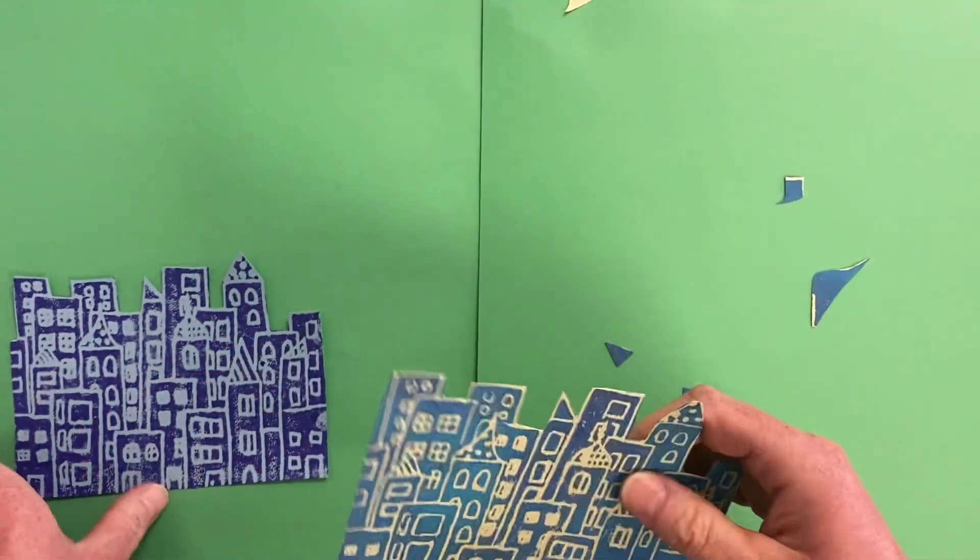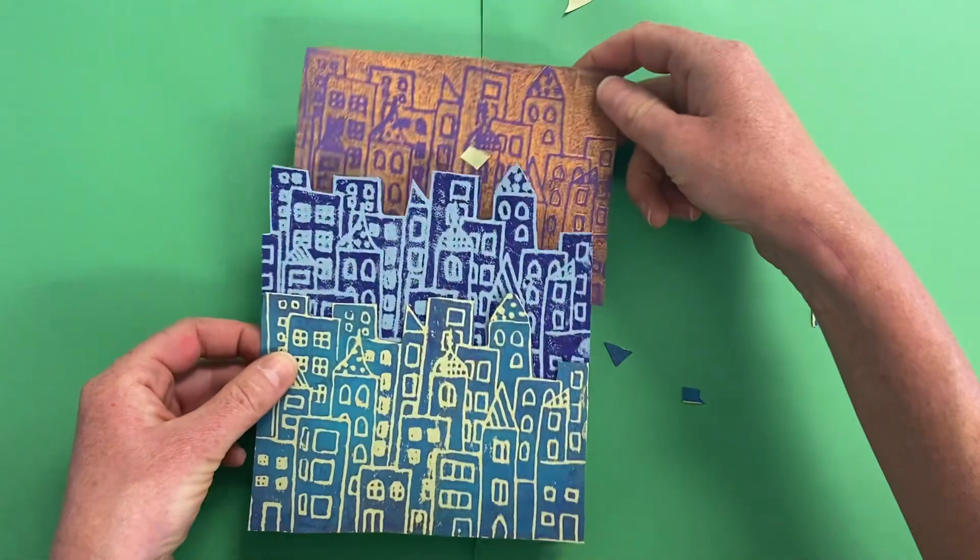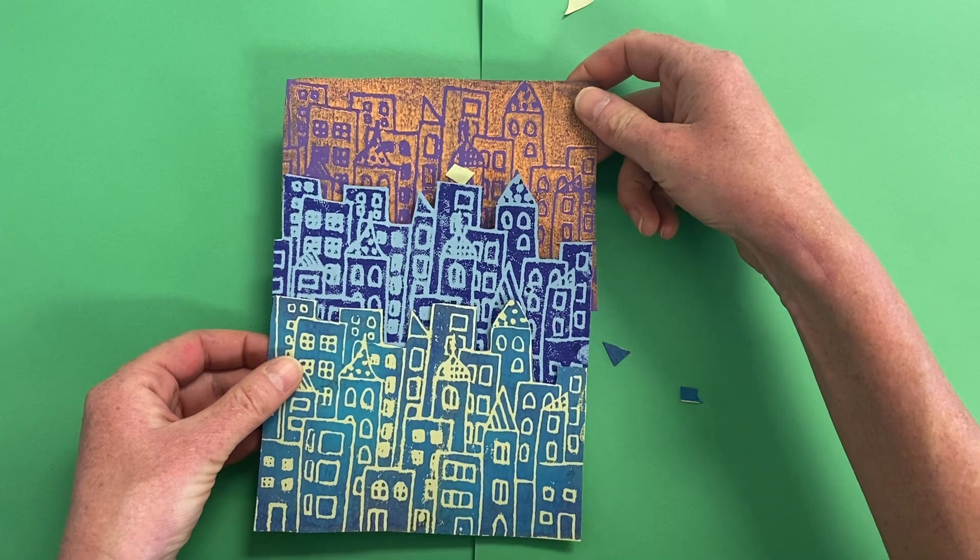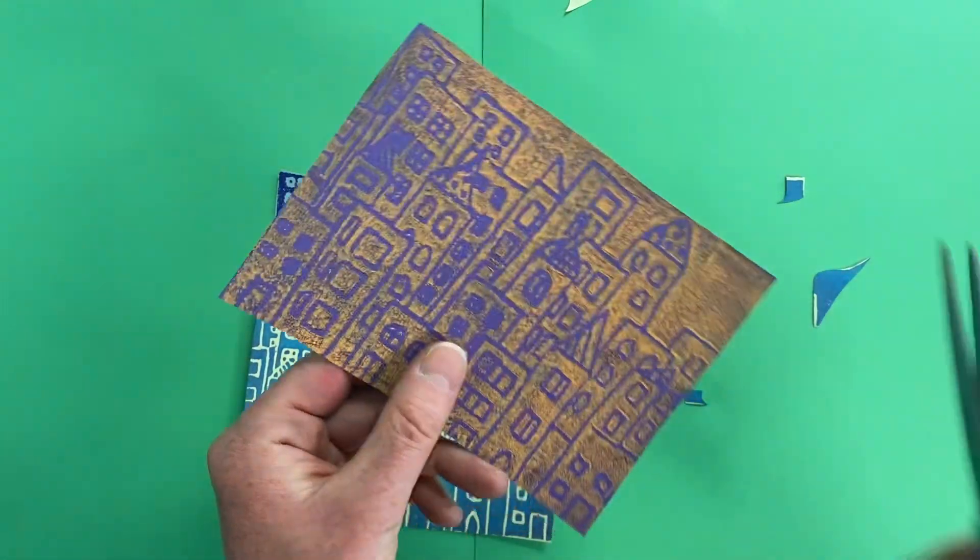So you need to cut all three of your cityscapes out because later on we're going to go and overlap these. So I'm going to keep working on this and I'm going to let you guys get started.